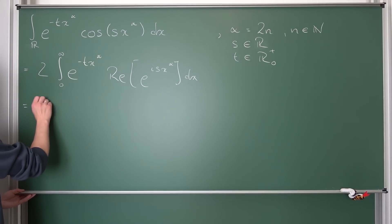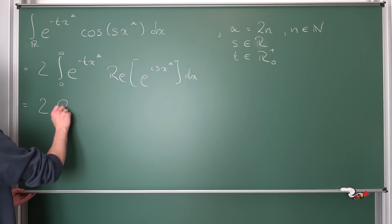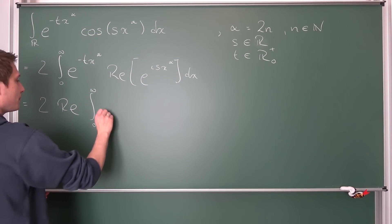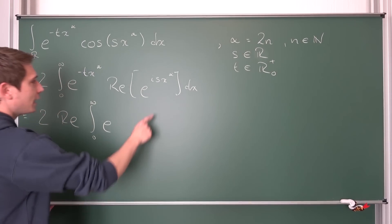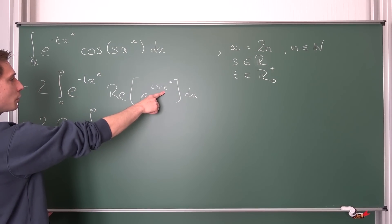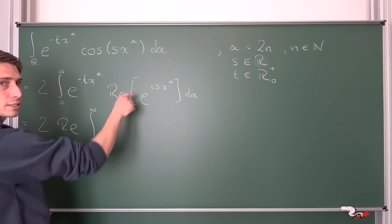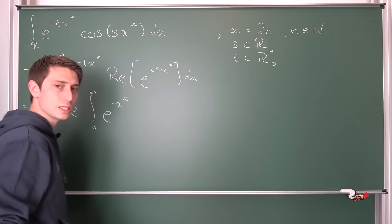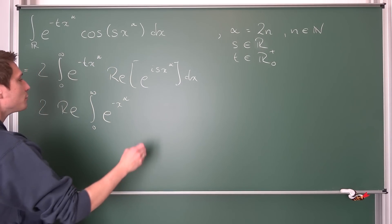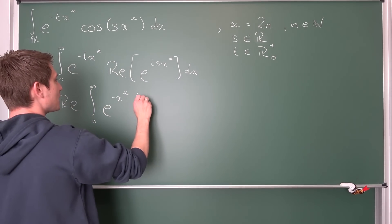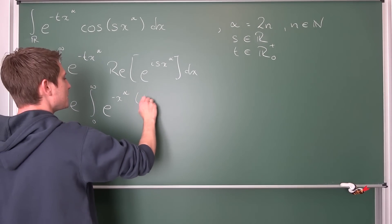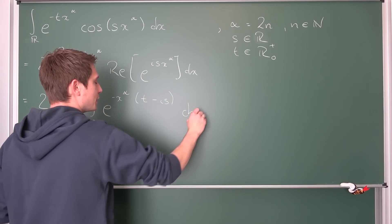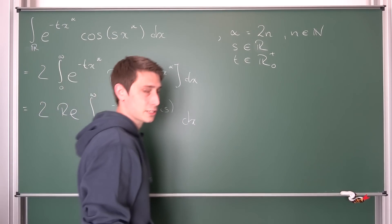Let us bring the real part to the outside and use the functional equation of the exponential function to bring this together to some common exponent. So this is nothing but two times the real part of the integral from zero to infinity of e to the negative x to the alpha times the quantity positive t minus i·s, integrated with respect to x.